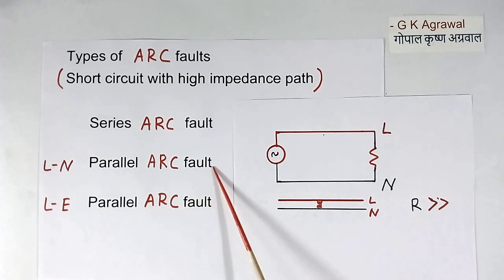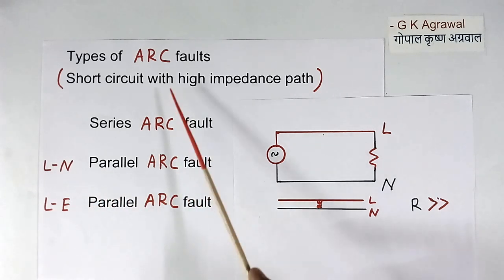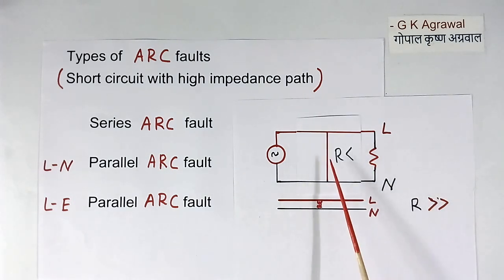Now line to neutral parallel arc fault. This line wire and neutral wire will be running parallel. Distance between these two will be very less. Now suppose here, there is insulation cut or some other problem. Then there will be arcing or sparking. That is called line to neutral parallel arc fault, but this will be high impedance path.